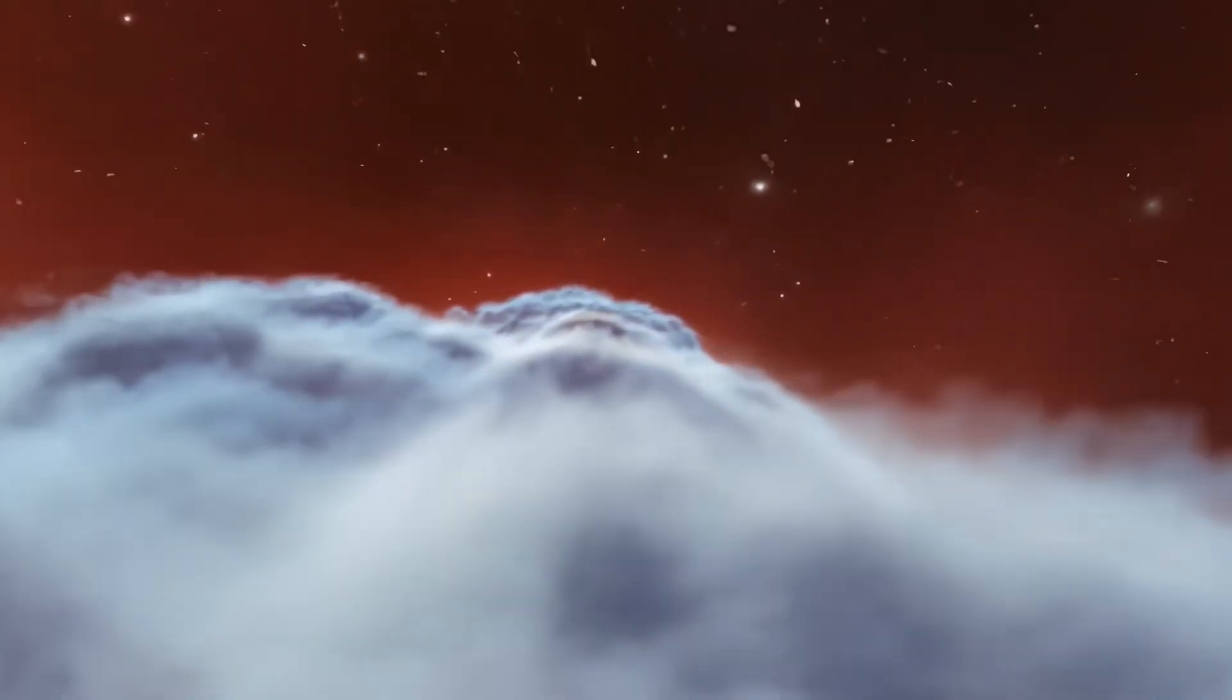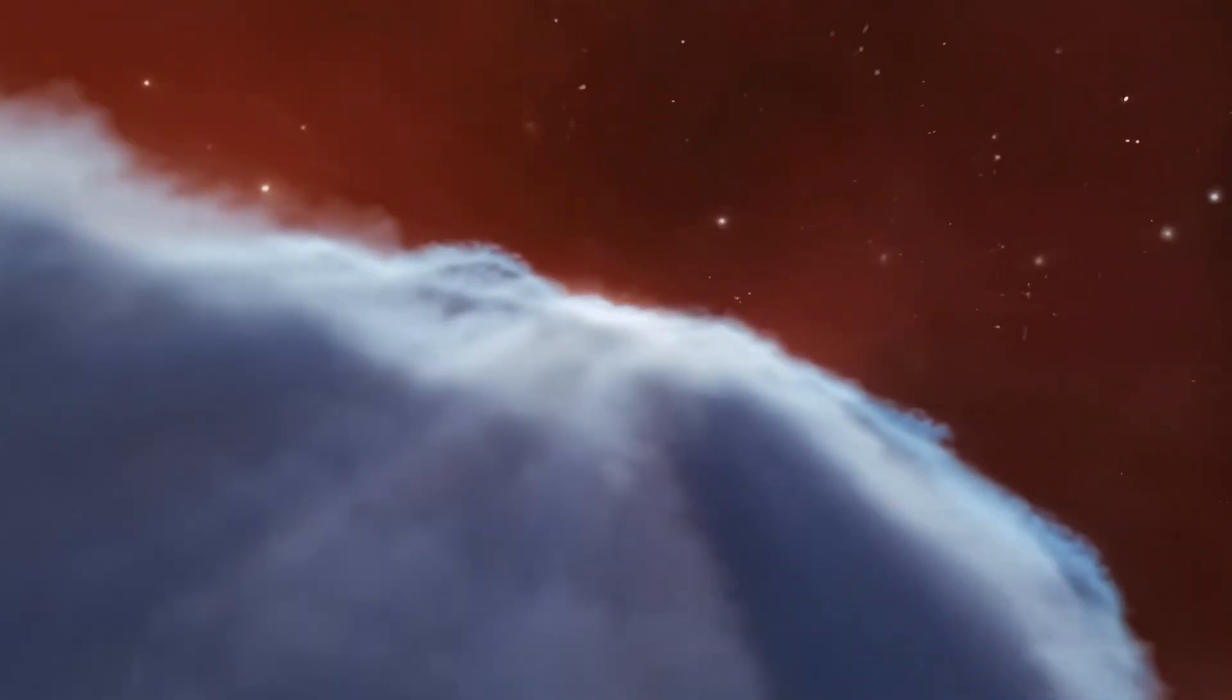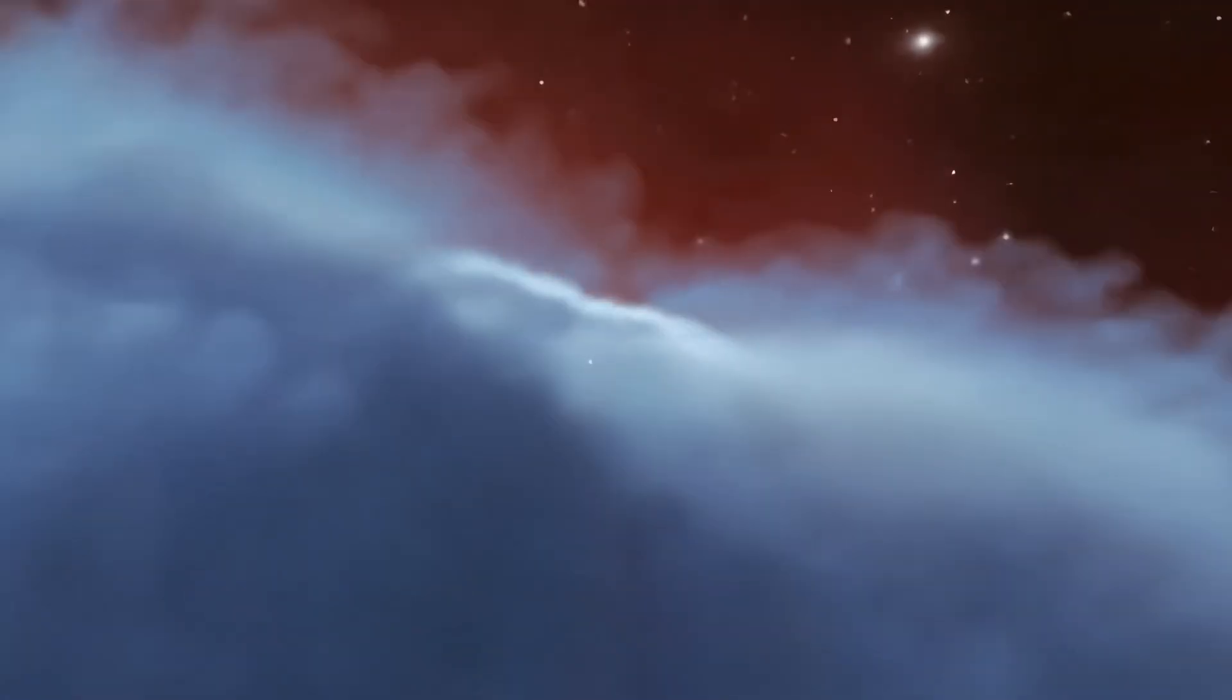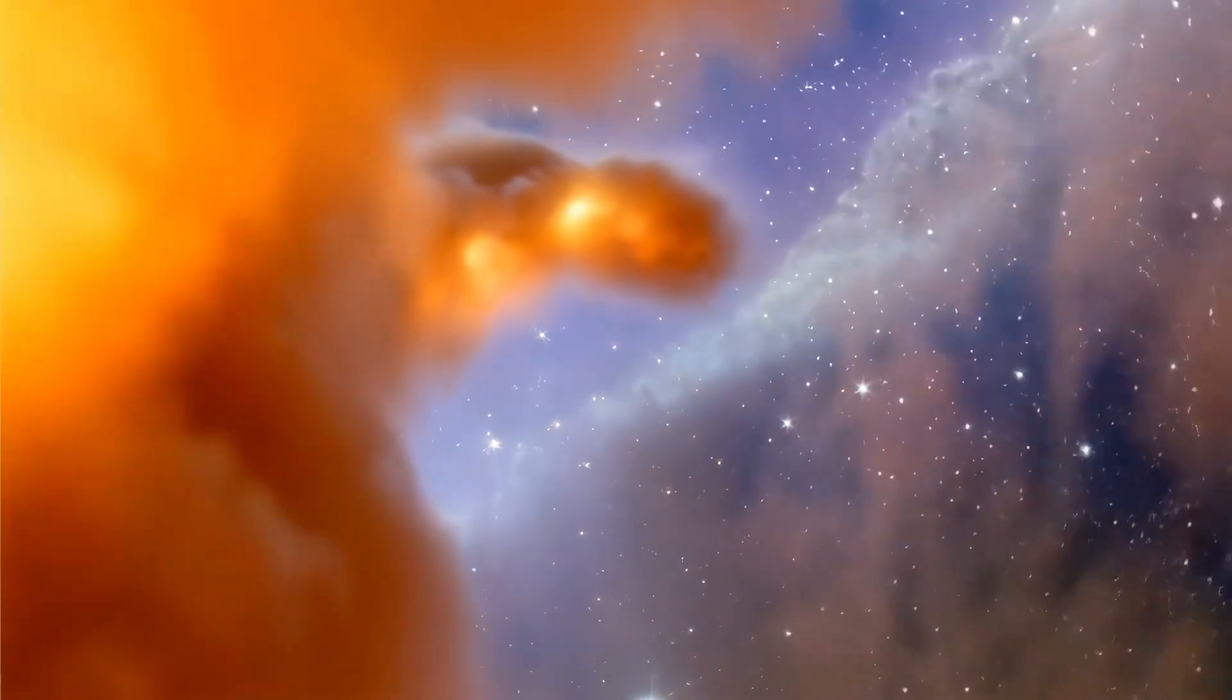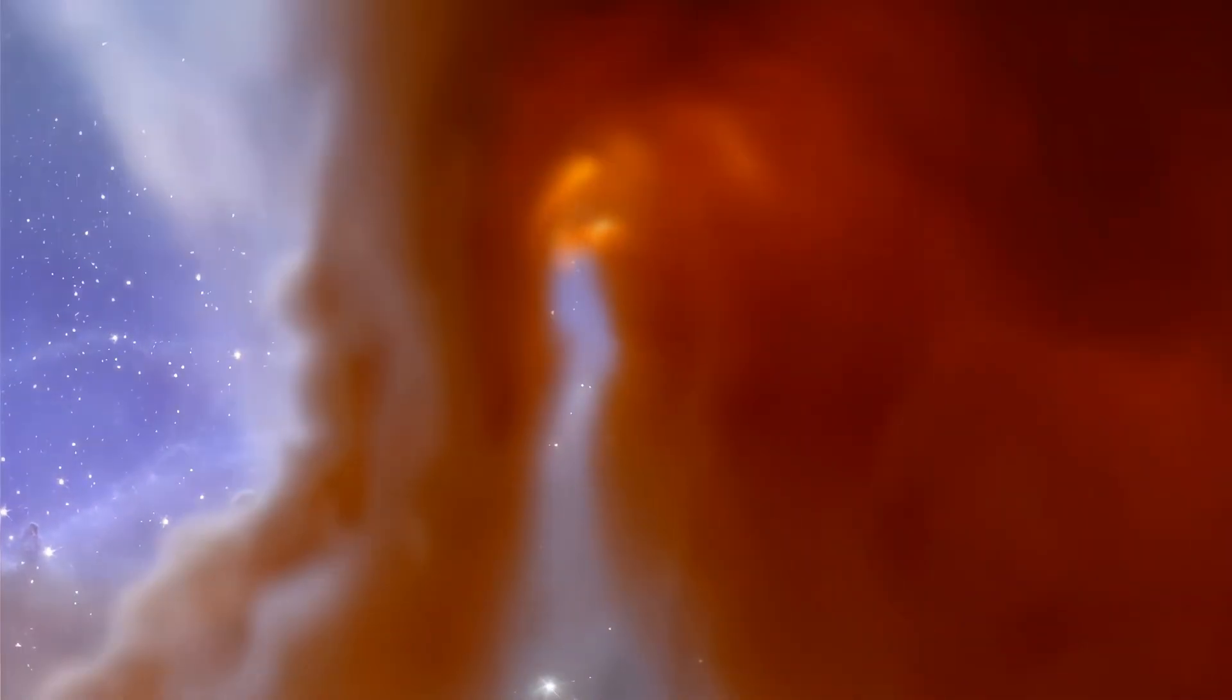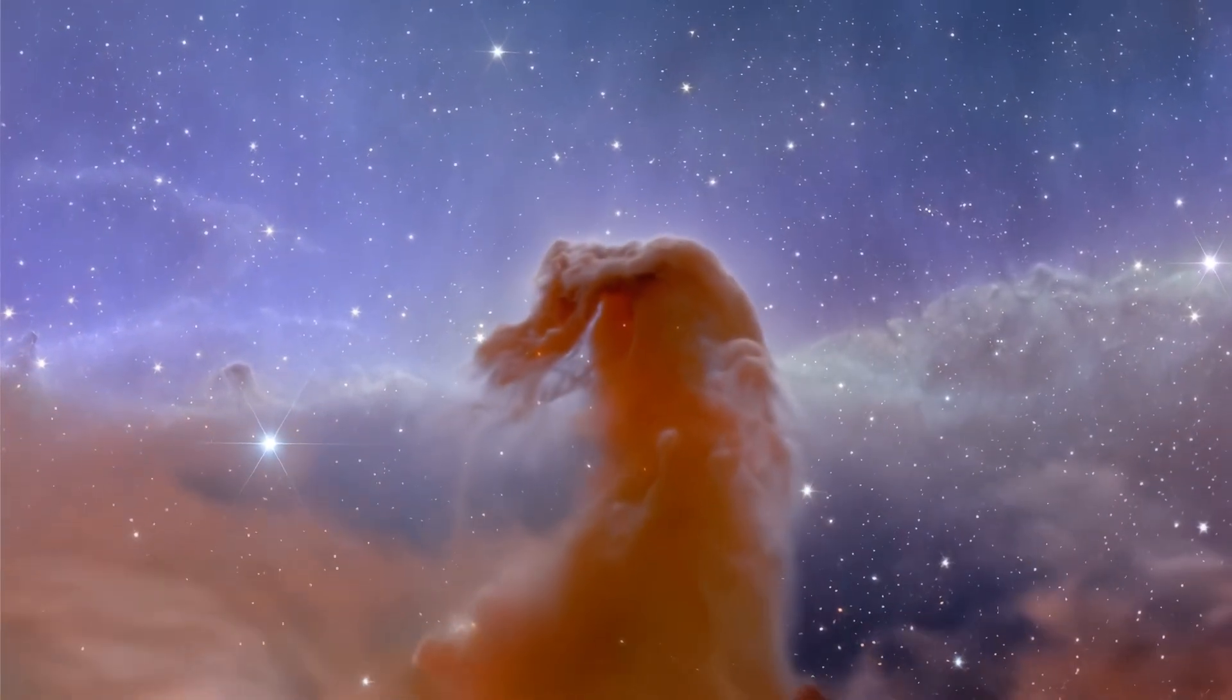A column of dense gas and dust rises from the Orion B molecular cloud, its illuminated edge shaped by ultraviolet light from Sigma Orionis, 1,375 light years away in the Horsehead Nebula.